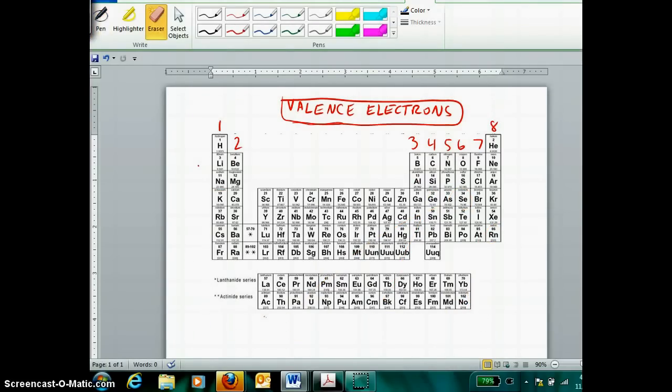So the only remaining question is, what if I chose, instead of a main group element, a transition metal or a rare earth metal? Let's take iron as an example.